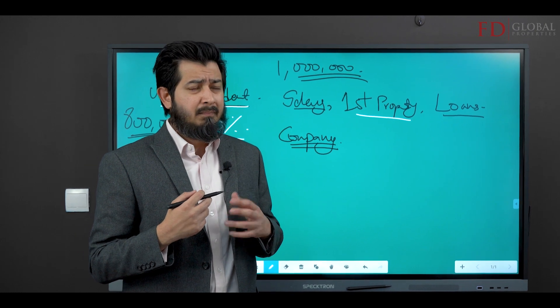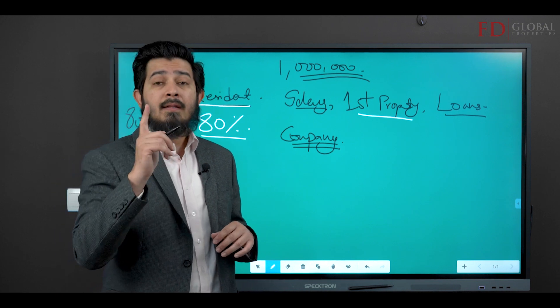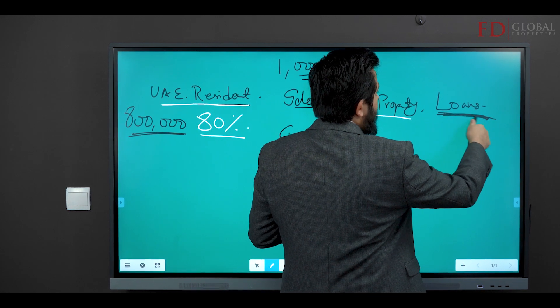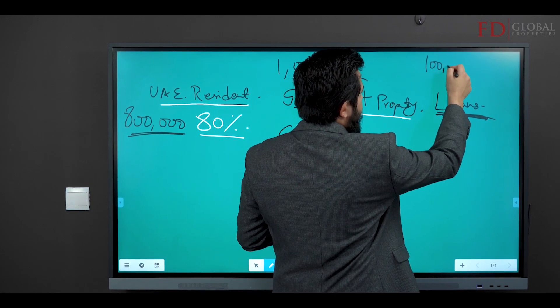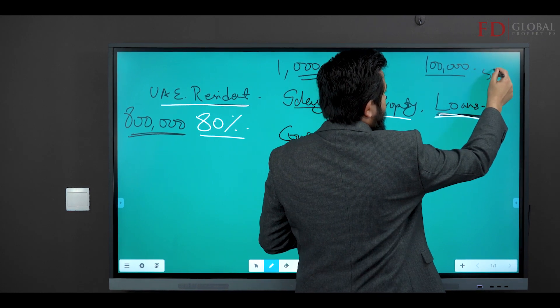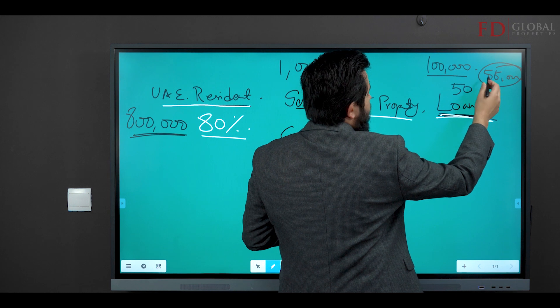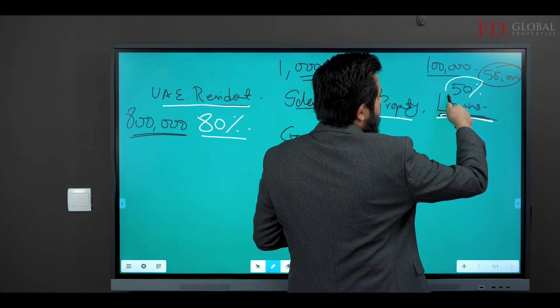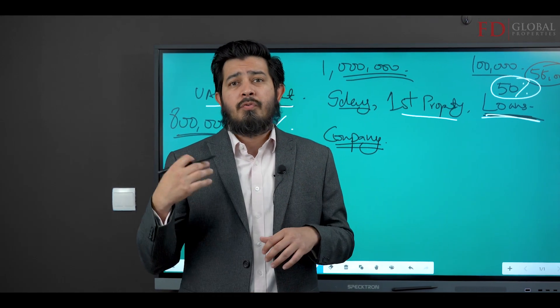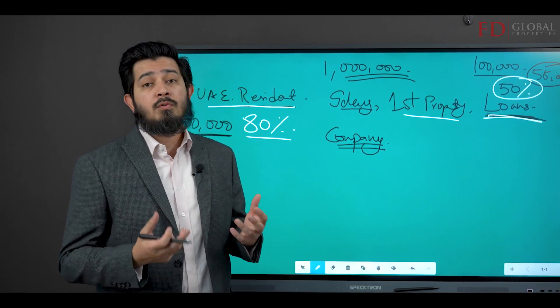It varies though. The central bank says that if you've got other loans and let's say your salary is 100,000 but your other loan repayments are 55,000, you won't be able to get anything. The central bank says nobody should be paying more than 50 percent of their total monthly income towards repaying credit cards, car loans, or other debt. The reason is they want you to be able to survive well.